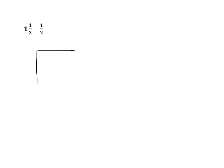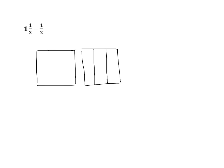First we're going to model with two rectangles our mixed number. And we have 1 and 1 third. So we're going to partition the second rectangle into thirds. We have 1 whole and 1 third. Now we want to find our common denominators, so we're also going to partition this part into thirds. So our 1 whole becomes 3 thirds.